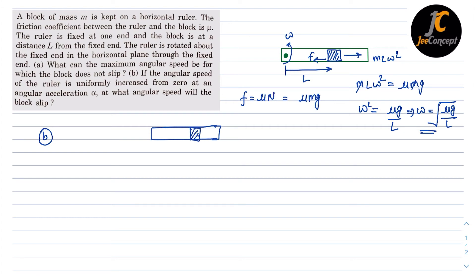So if the angular speed is increasing, that means there will be a tangential acceleration, which is equal to l times alpha, where alpha is the angular acceleration, and the radial acceleration ar acts in the left hand side direction.